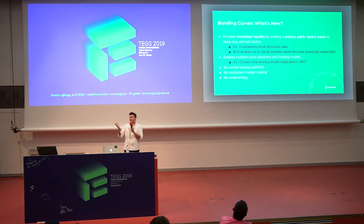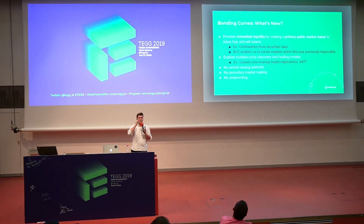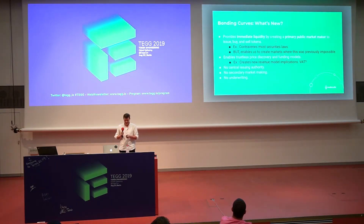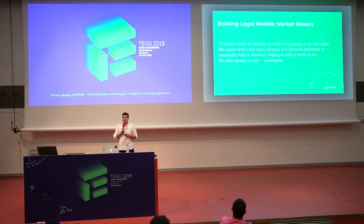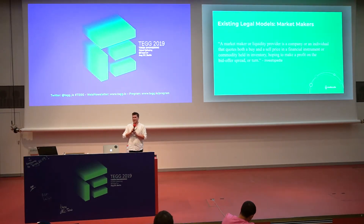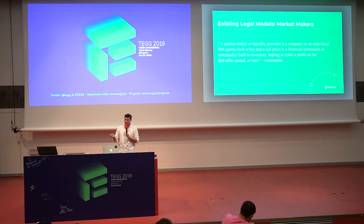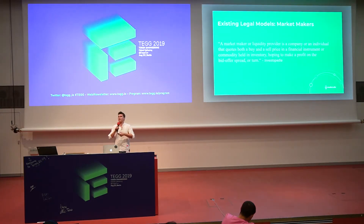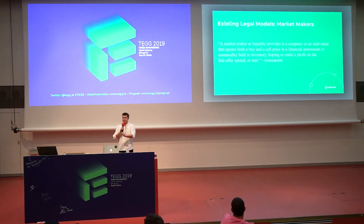Bonding curves also enable trustless price discovery and new funding models through taxation schemes, but consider that this creates revenue model implications. If you put a tax on a bonding curve — as a lot of DAOs are experimenting with, like a project called continuous organizations — you essentially have a different buy and sell curve being used as a revenue model, which has interesting implications. Comparing to the legal definition of a market maker: a bonding curve is not a company or individual, it's an autonomous smart contract.